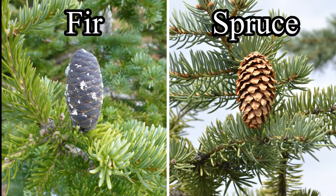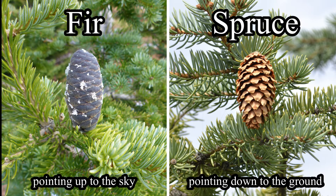However, if you're still unsure about whether a tree is a spruce or a fir, you can easily distinguish them by the cones, which can be done from a distance as well. Spruce cones point down to the ground while fir cones point up to the sky. An easy way to remember this is that mammal fur sticks up immediately after birth — similarly, the reproductive organs of the fir tree also stick up.